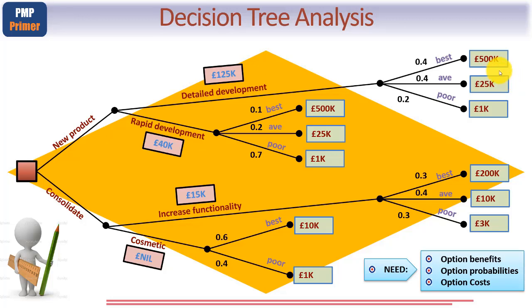So in the case of the detailed development, sales and marketing estimate that at the best case, we'll make half a million pounds revenue per quarter. If it doesn't pan out as well as that, they think that on average, we'd make at least £25,000 a quarter. If sales are really poor, in a worst case situation, we may only make £1,000 a quarter. Now these are invented figures, you'd have to put your own in. And in this case, I'm using best, average and poor, as indeed I am down here and here.